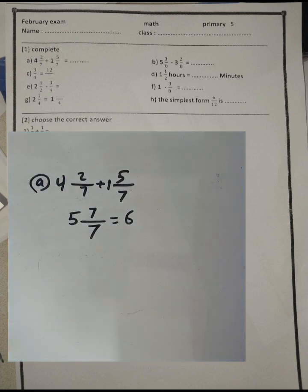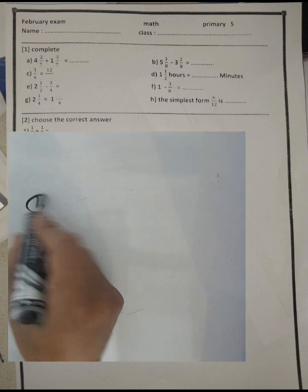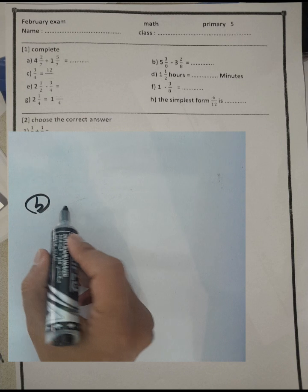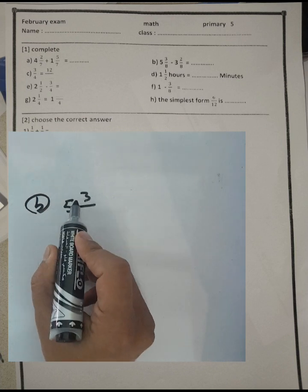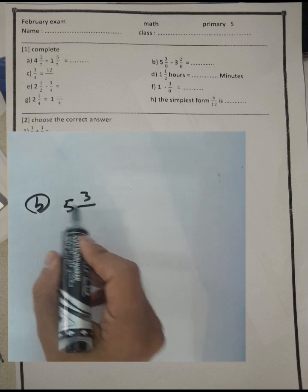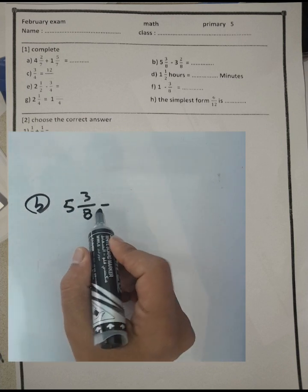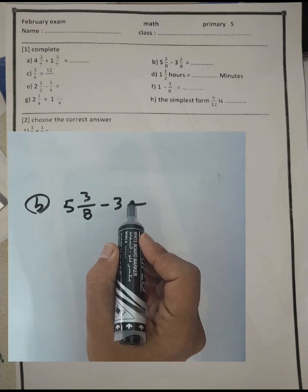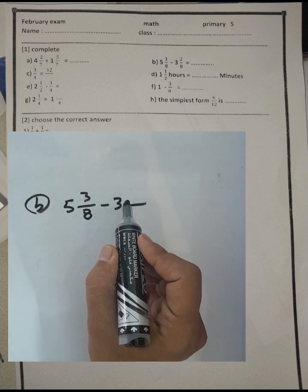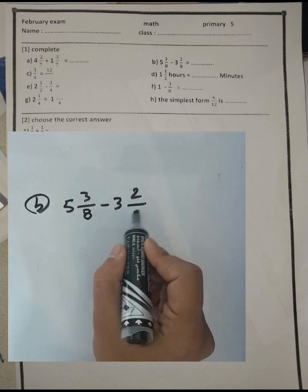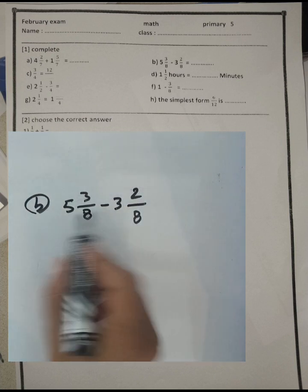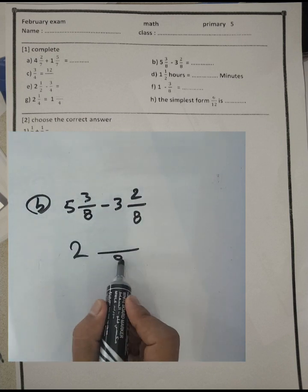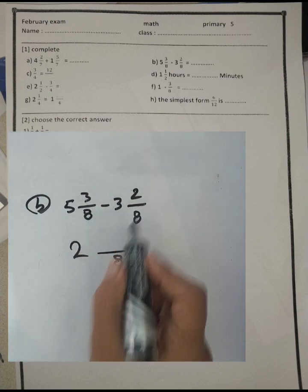Letter B: five and three over eight subtract by three and two over eight. Five minus three equals two, and write eight in the denominator. Three minus two equals one. Then the result will be two and one over eight.